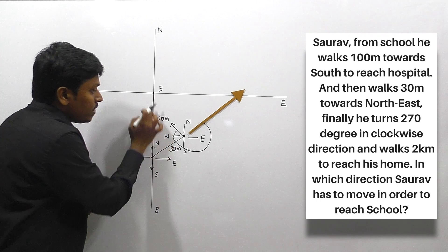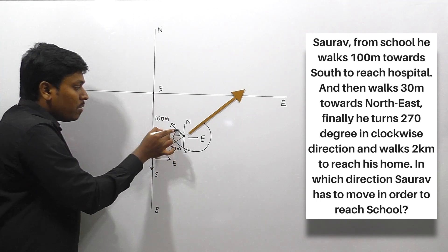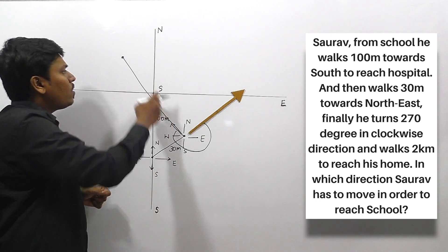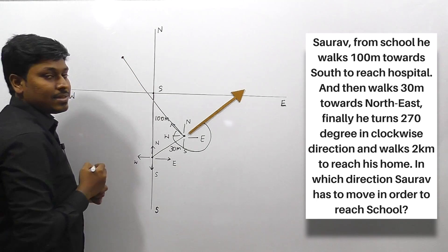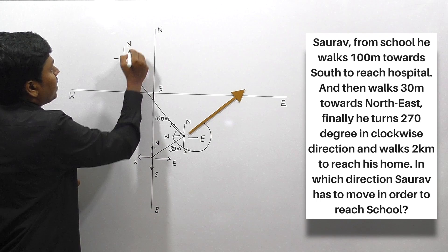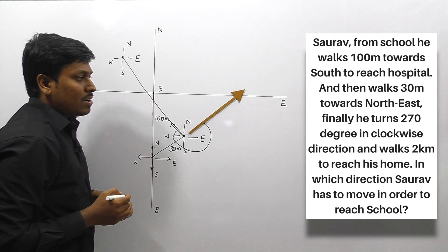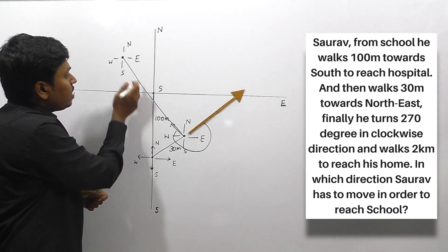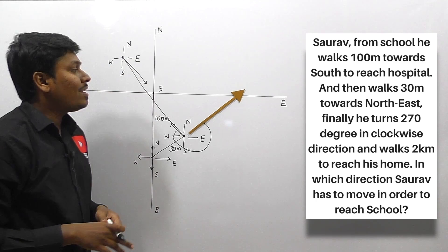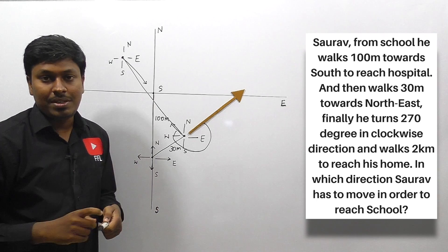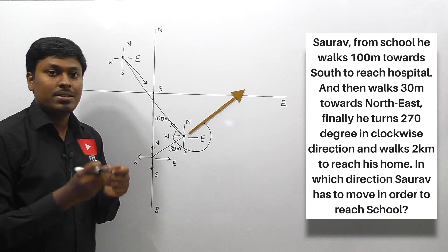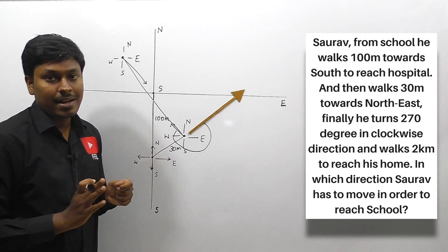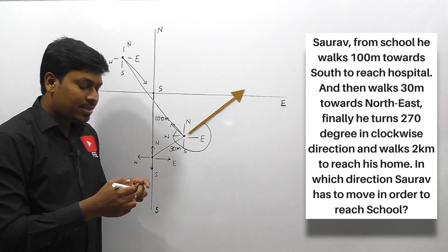From this point he walks 2 kilometers — note that all other values are in meters, so 2 kilometers is a much longer distance. He will definitely be at this far point. After reaching this point, draw a small direction — north, south, west, and east. The question is: in which direction does Sorrow have to move to reach school? We know he started from school, so from his final point he should walk in southeast direction to reach school. The answer for question number two is southeast. The dotted line is most important as it indicates the direction a person is facing.